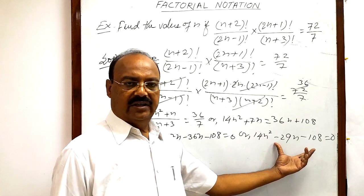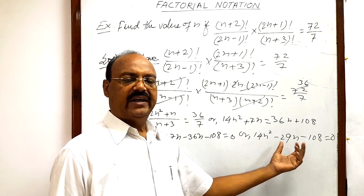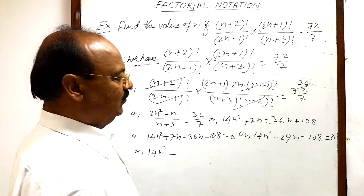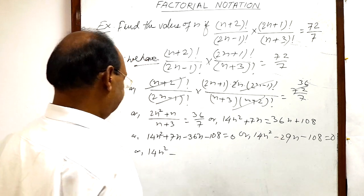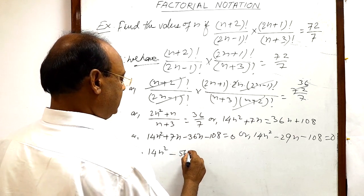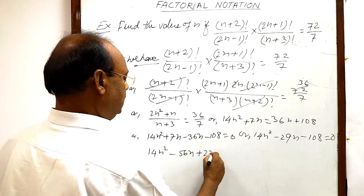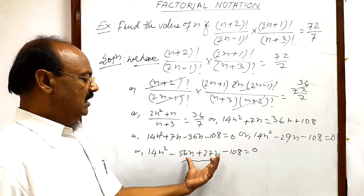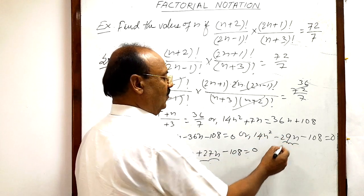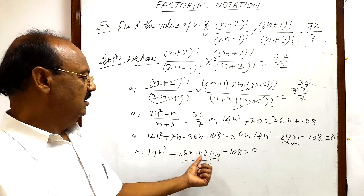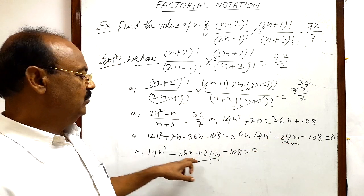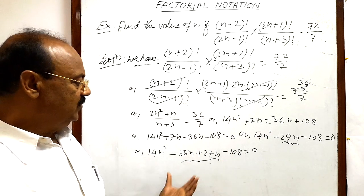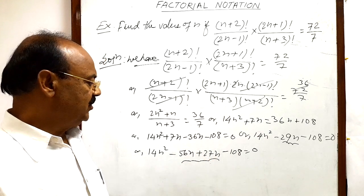We will factorize this quadratic equation to find the value of n. The middle term -29n can be split as -56n + 27n, since -56 + 27 = -29, and 14 × (-108) gives the required product. So we rewrite as 14n² - 56n + 27n - 108 = 0.